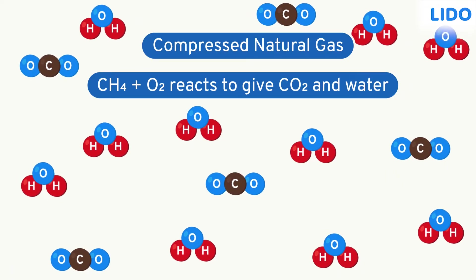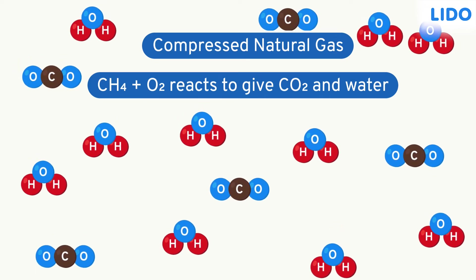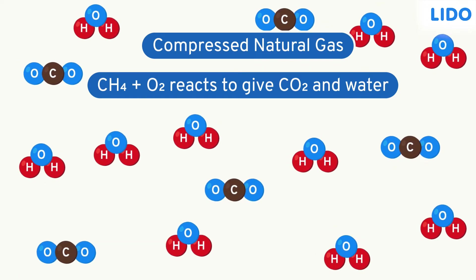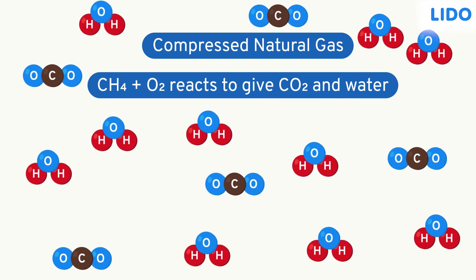When methane burns in the presence of oxygen, the atoms present in methane mix with the oxygen and reshuffle to form new groups of carbon dioxide and water. The total number of atoms remains the same and a lot of energy is released in the reaction.